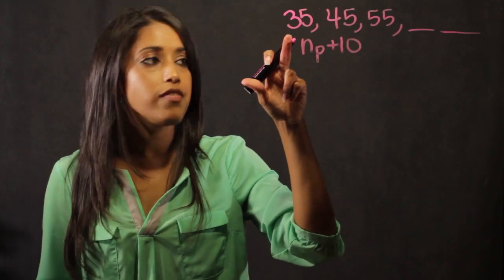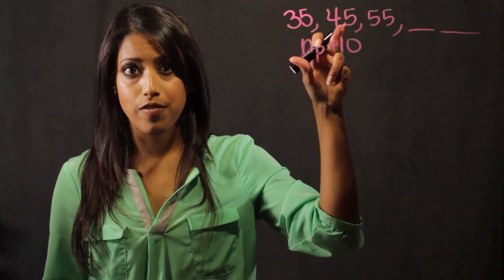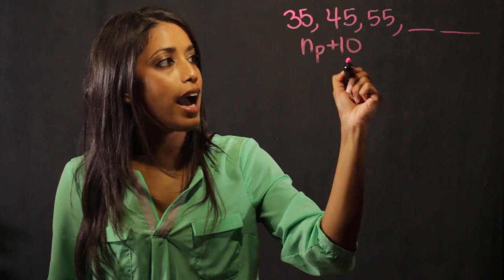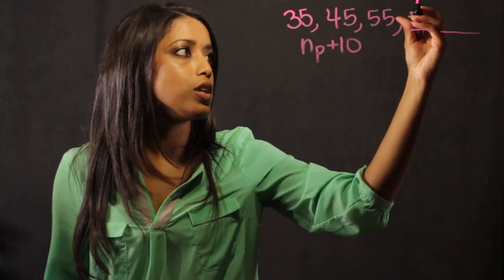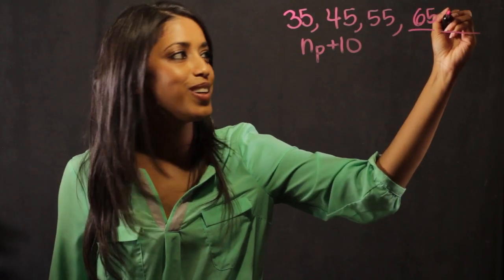So if I look at 35, I add 10, I get 45. If I add 45, add 10, I get 55. So the next numbers are going to be 65 and 75.